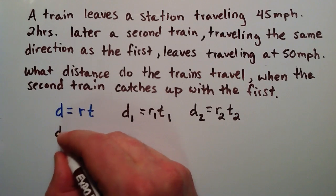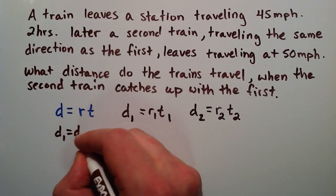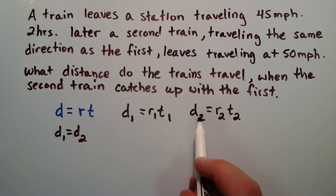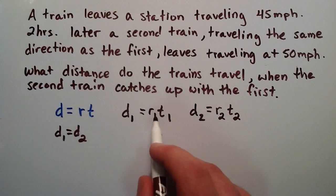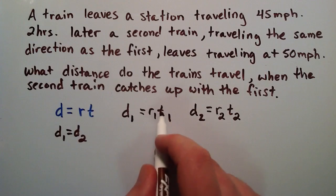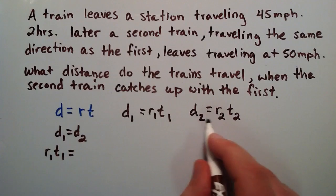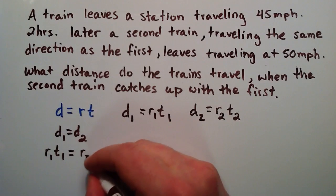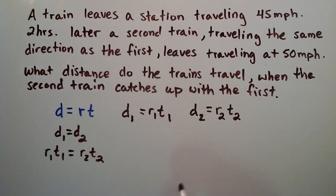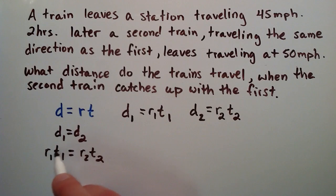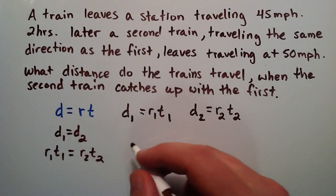When d1 equals d2 is when the catch-up happens. Since we explicitly defined d1 as r1t1 and d2 as r2t2, we can replace them to get r1t1 equals r2t2. We know what r1 and r2 are since those were given in the problem, but we need to figure out how to write the two times using a variable that relates to both.